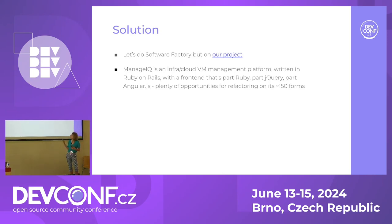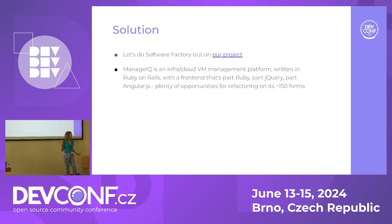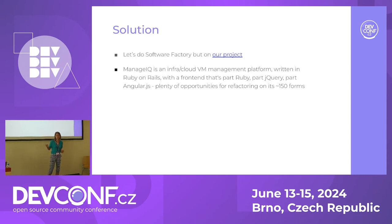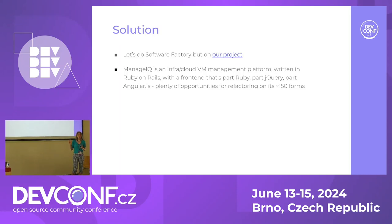So we came up with the solution: let's do Software Factory on our ManageIQ project. ManageIQ is an infra-cloud VM management platform — that's not the interesting part. But the code base is huge and an amazing lesson in history: the UI was written in Ruby on Rails, there was some jQuery, some Angular 1 when everyone else was using Angular 4, and there were more than 150 forms — too many opportunities to improve, refactor, and debug.